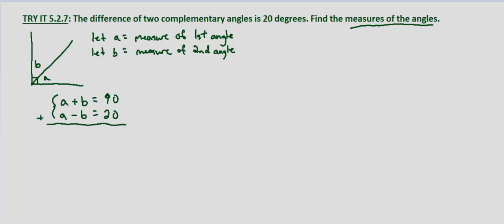So A plus A is 2A. B plus negative B is 0, so these cancel out. And 90 plus 20 equals 110. Divide both sides by 2. And we get A equals 55 degrees.